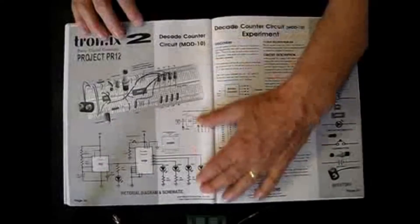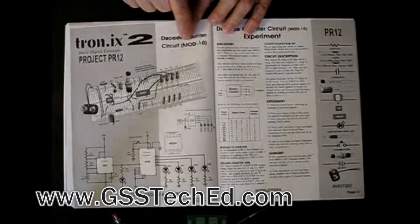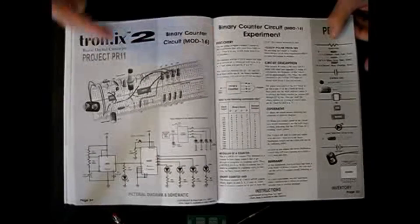Now, here is the decade counter, same binary counter, except this time it's mod 10. It only counts to 10 and then repeats. Over here, was mod 16. It will go up to 16 and repeat.